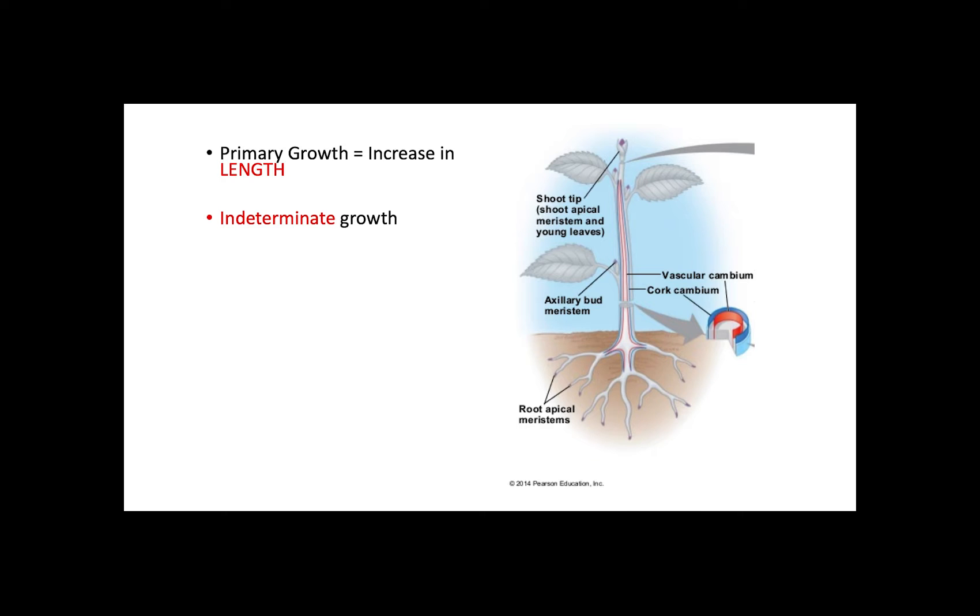Plants, with some exceptions, have indeterminate growth. This means that these organisms never stop growing and are constantly producing new cells from specific meristems.